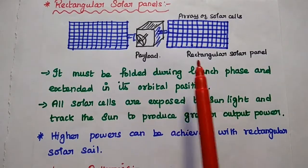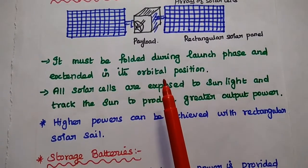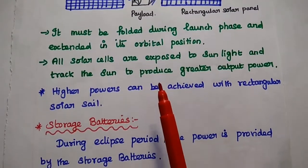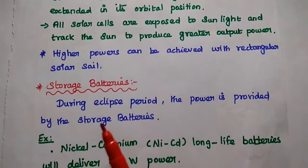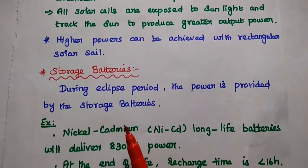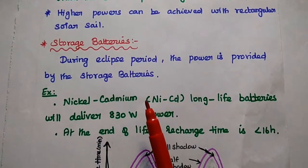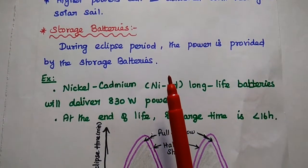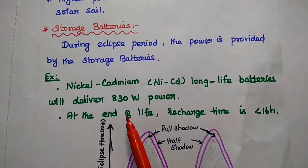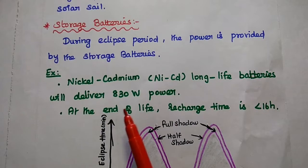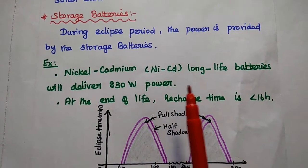The rectangular solar panel produces higher power than the cylindrical panel, hence it is widely used in satellite communication systems. During the eclipse period, power is provided by the storage battery. For example, nickel-cadmium long-life batteries deliver 830 watts per hour. At the end of the lifetime, the recharge time is 16 hours.